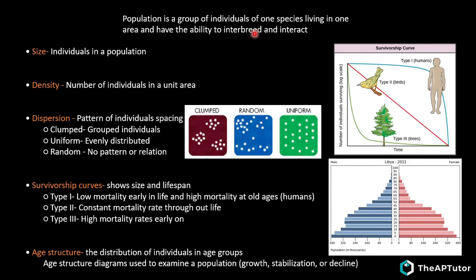Population ecology: a population is a group of individuals of one species living in one area who can interbreed and interact. Key properties include size, density (number of individuals per unit area, e.g., 100 people per square mile), and dispersion - the pattern of individual spacing. There are three dispersion patterns: clumped, where individuals are grouped in small areas like wolves in herds; uniform, where they're evenly distributed like lions protecting territories; and random, where there's no pattern.